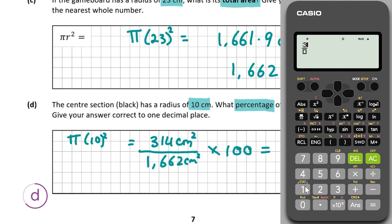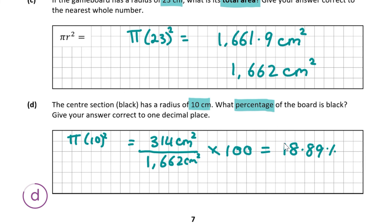Get your fraction sign in your calculator: 314 divided by 1662, then multiply by 100. We get 18.89 percent.